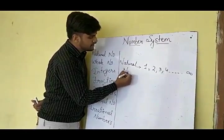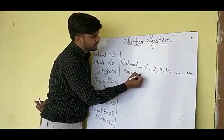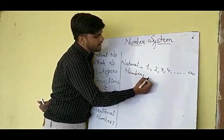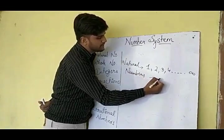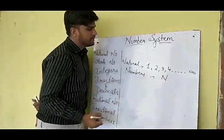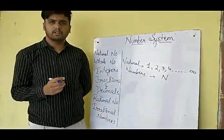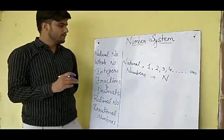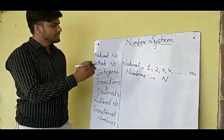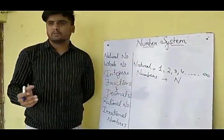These numbers are called Natural Numbers and they are denoted by the symbol N. Now, other than natural numbers, there was a need of some other numbers also.